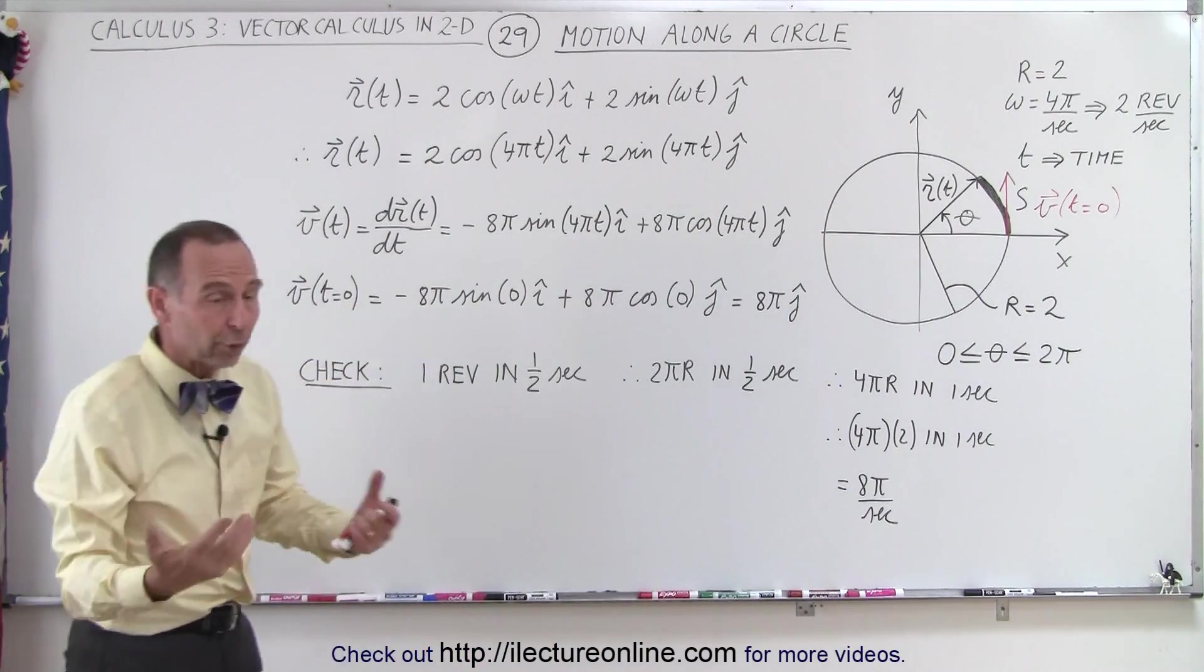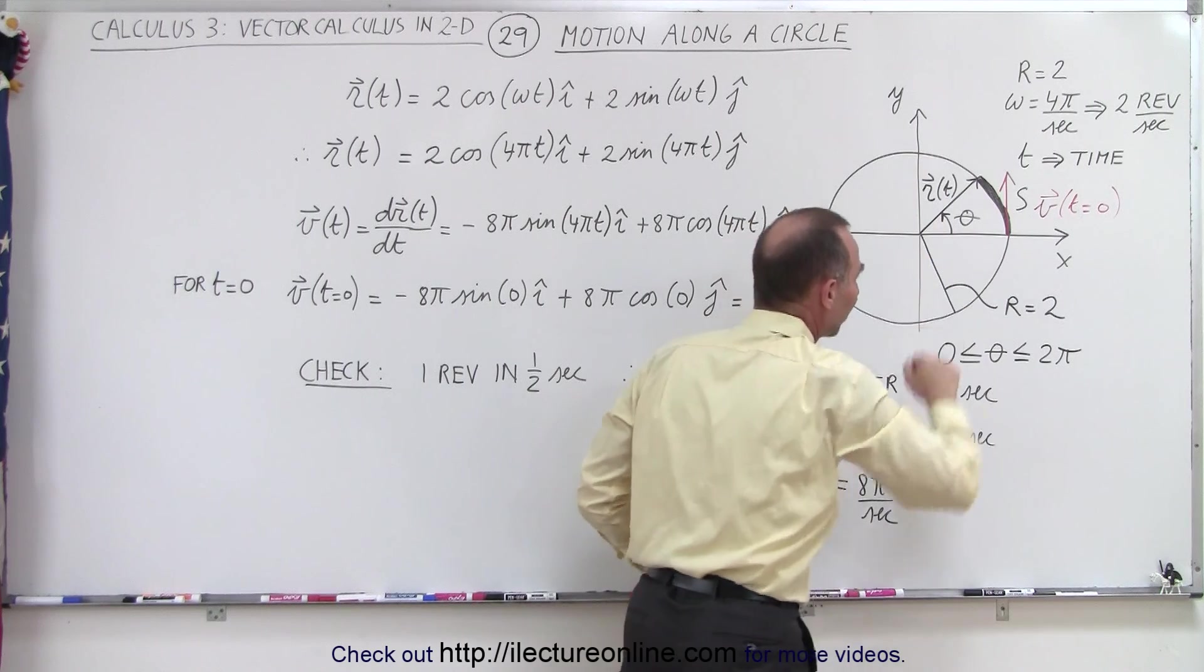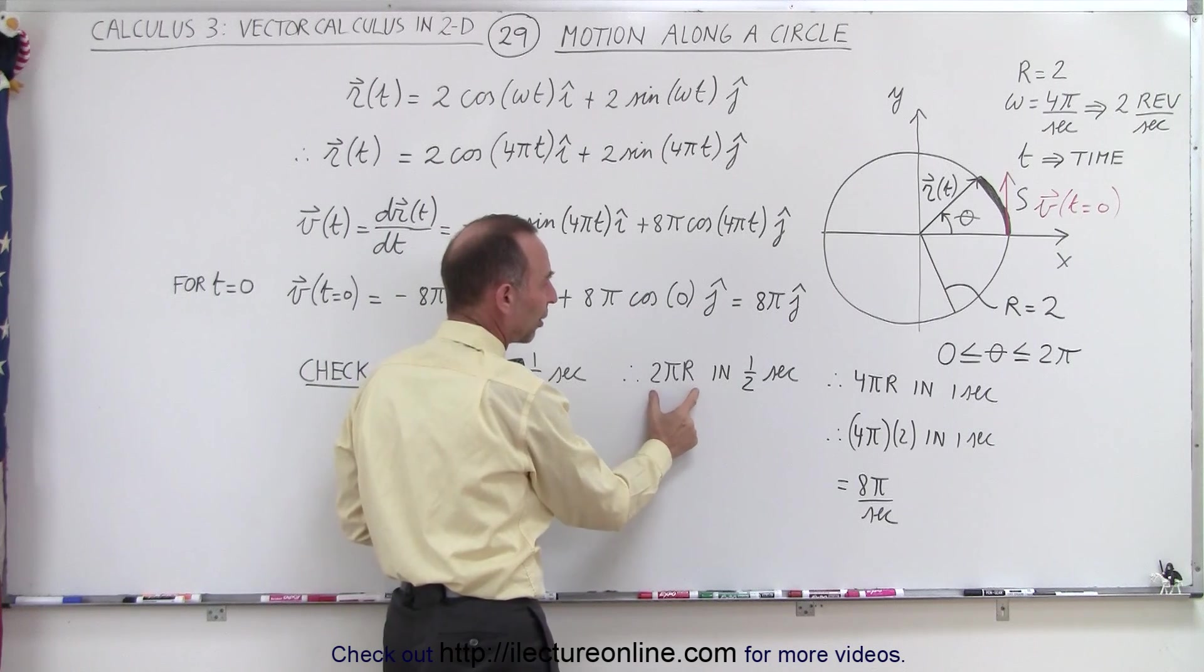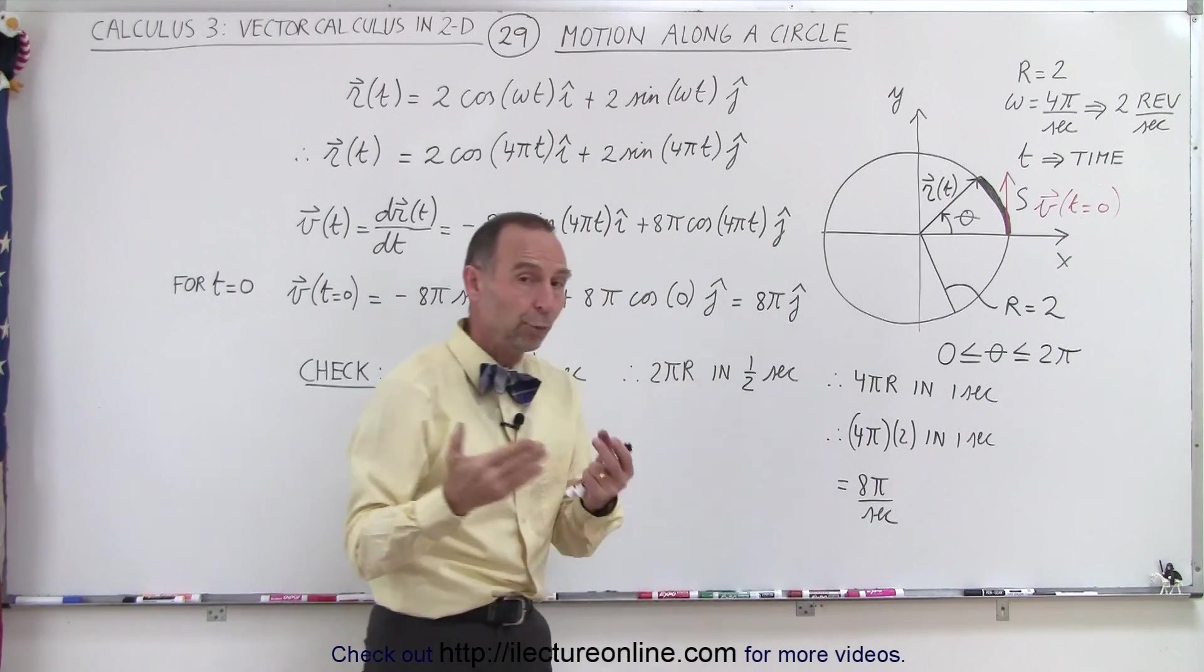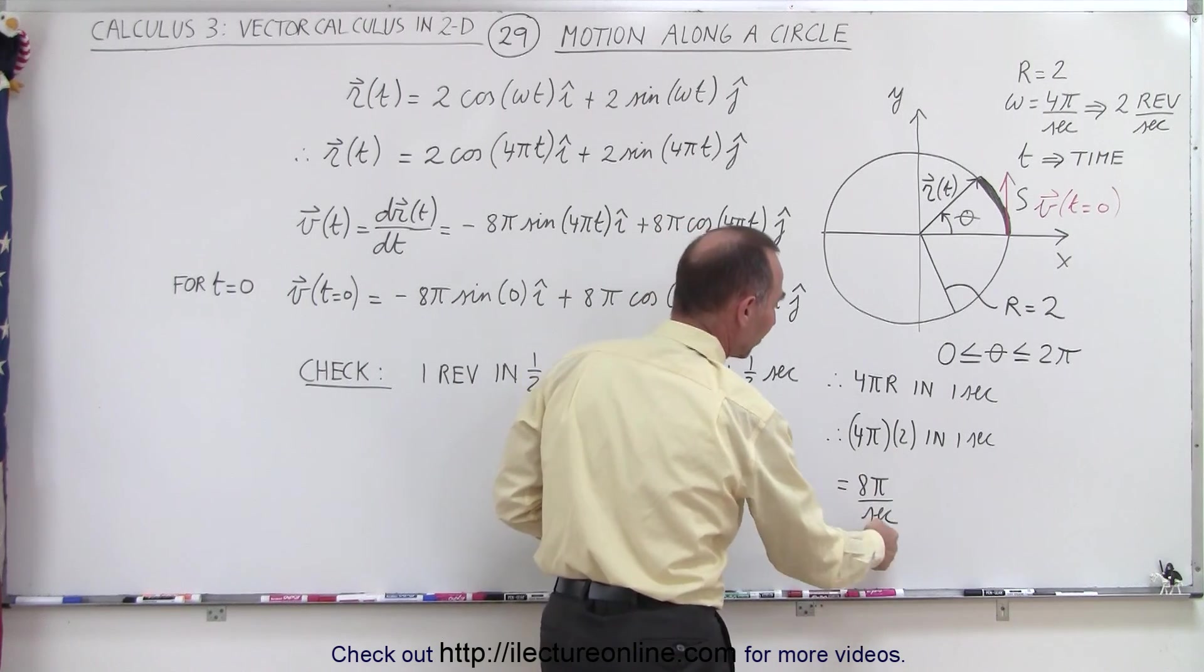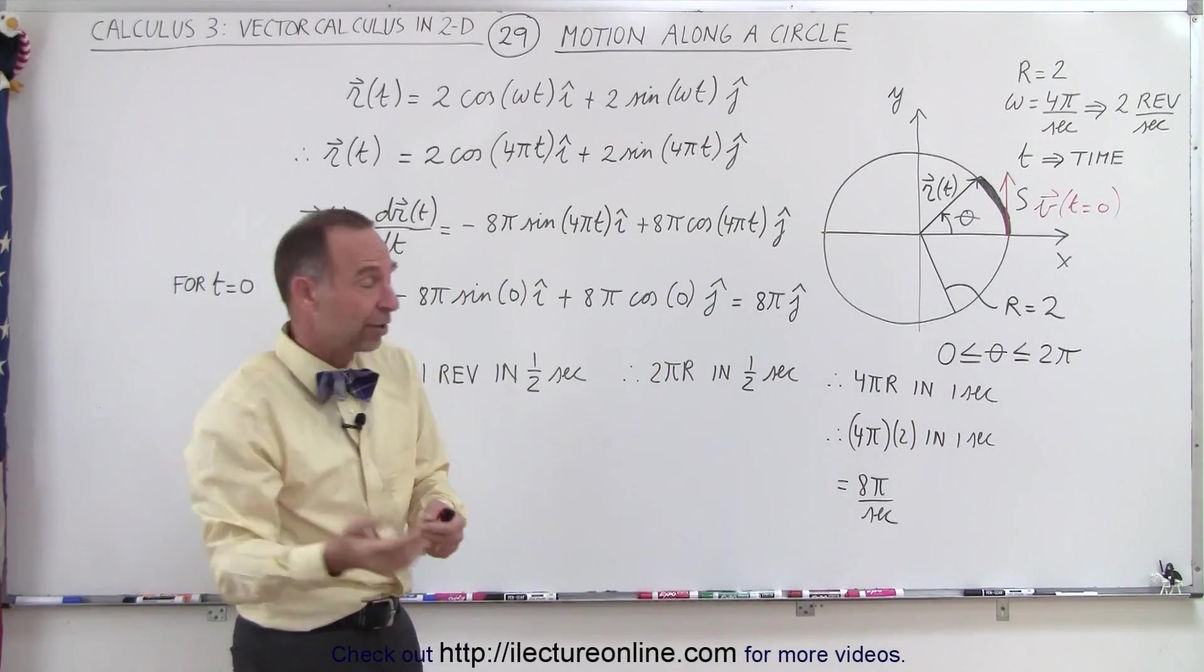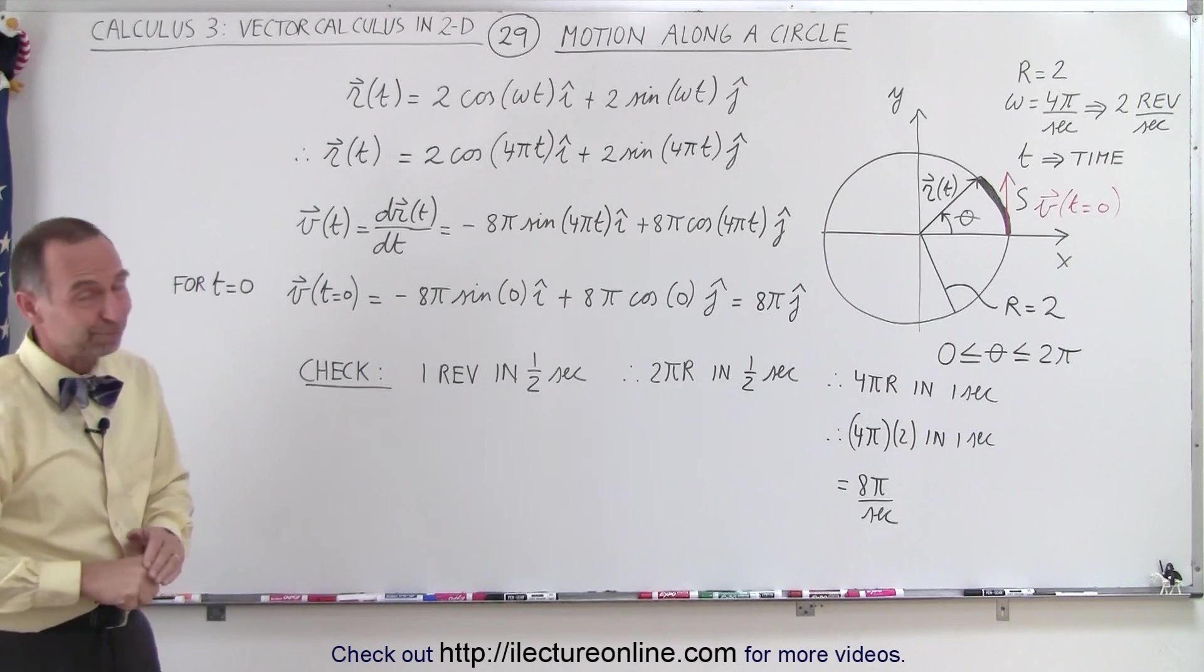Now let's check to see if that also makes sense, because after all, if we're traveling around the circle twice every second, that means we travel around the circle once every half second. So one revolution in a half second, and a revolution would be around the circle, and the distance around the circle is 2 pi r, so we travel 2 pi r in a half second, or double that in a full second, 4 pi r in a full second. And since r, the radius of the circle, is equal to 2, that means we're traveling 8 pi every second, and notice that the 8 pi per second is exactly what we found here to be the velocity vector at time equals 0. There's 0 velocity in the x direction, so obviously this velocity should match if we did things correctly, and since they match, it must be correct.